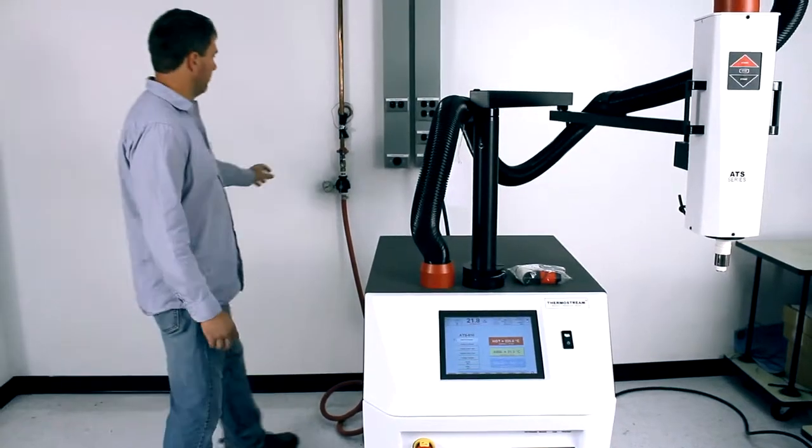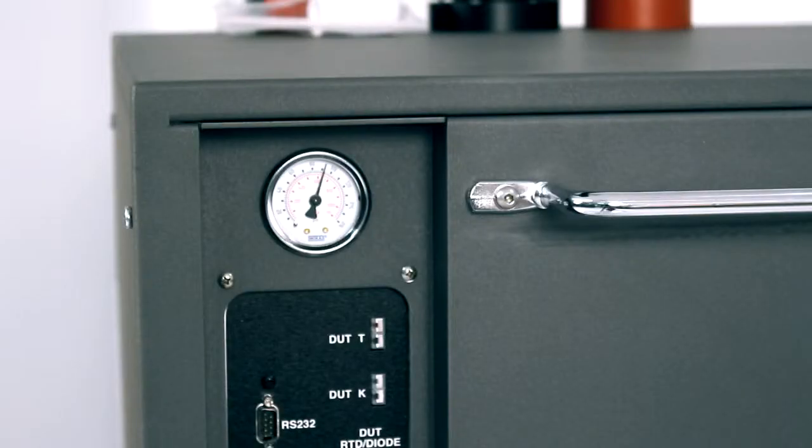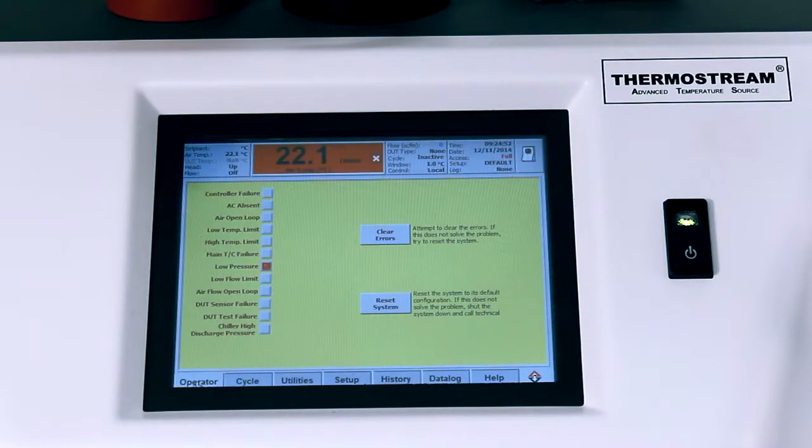We'll start by shutting off the compressed air to the system. The air pressure gauge on the rear of the machine will tell you that pressure has been removed. And the low air pressure error message will display on the screen.